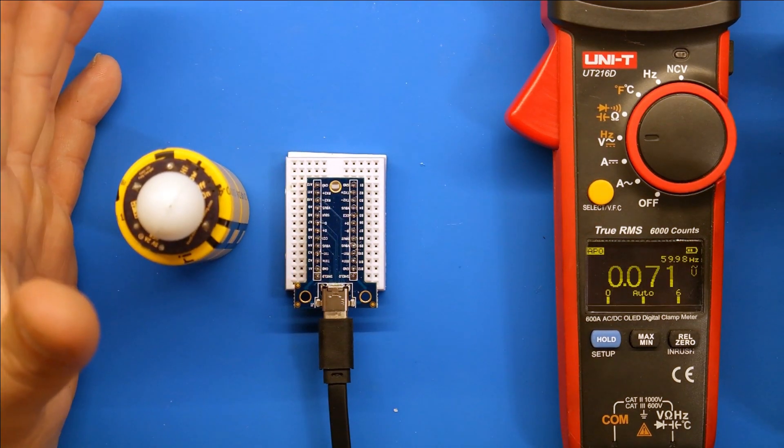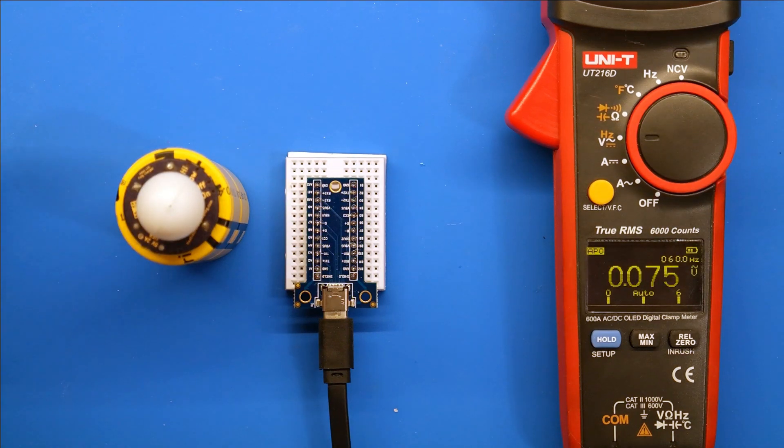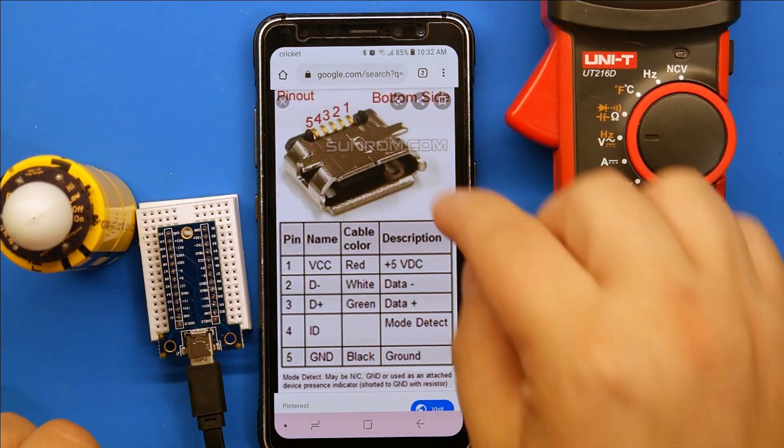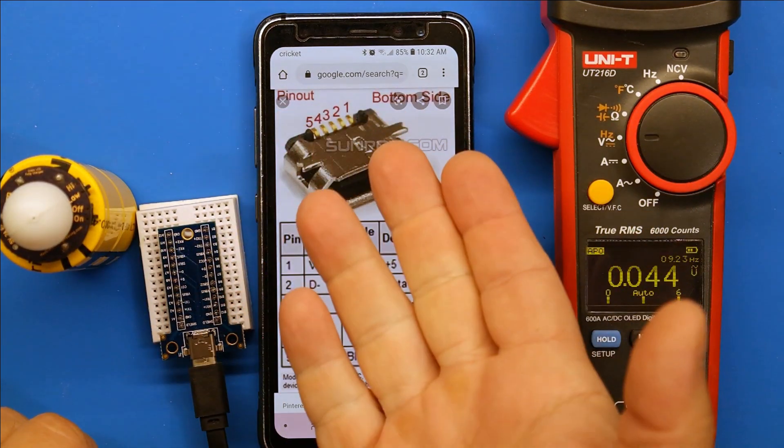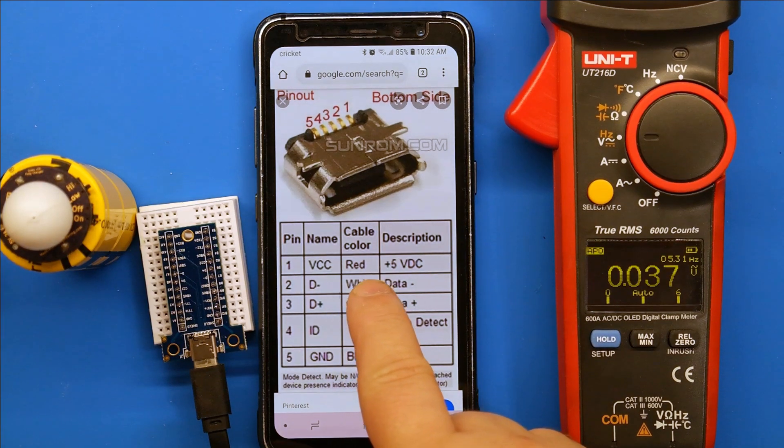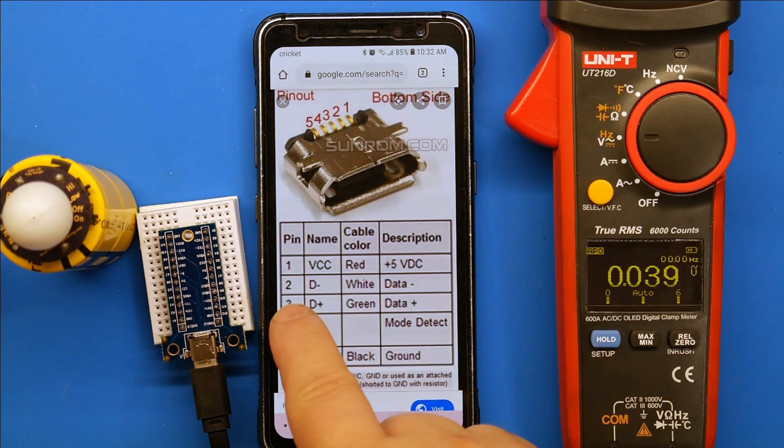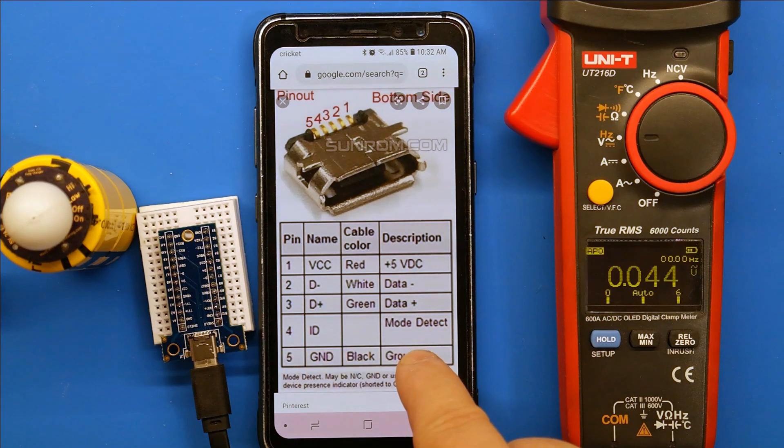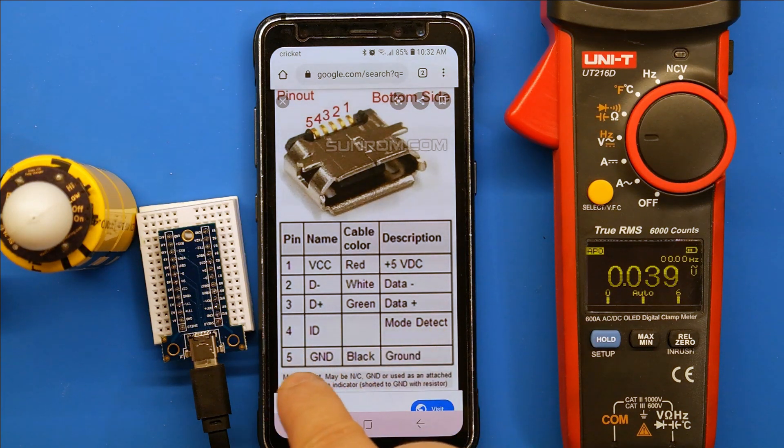I've always used micro USB, which is really easy because if you look at the pinout diagram of a micro USB, it has a total of five pins. It has VCC, which is your positive, that's your five volts DC, data lines which we don't use for power delivery, an ID which we don't really use for anything, and the ground.